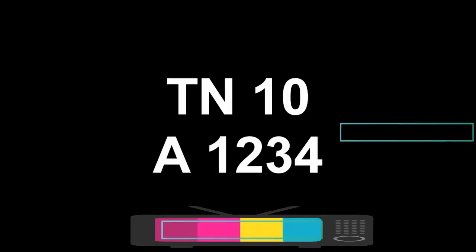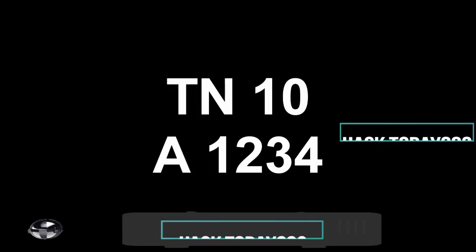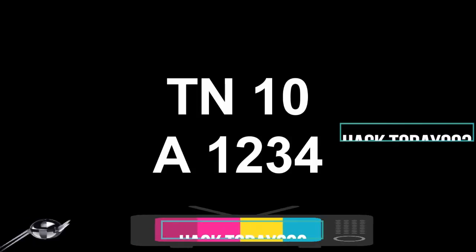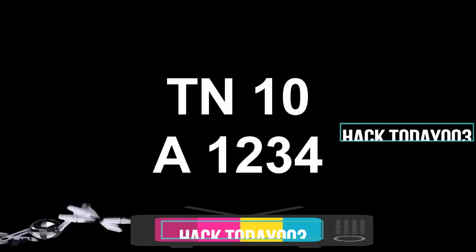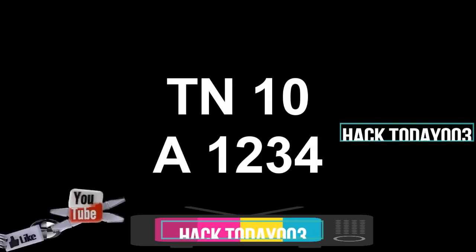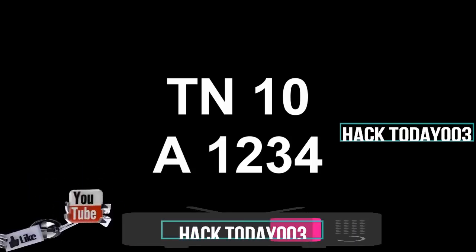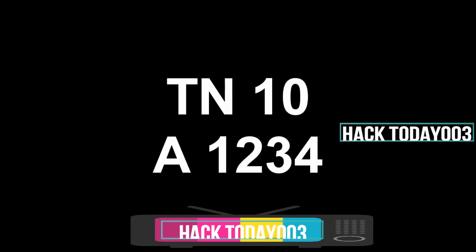If you look at what you are doing, you can add a number — for example, TN10A1234 — a car number or a bike number. So you can do that: a car number and bike number.